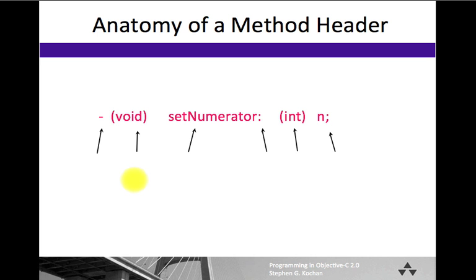Let's take a closer look, once again, for review of what a method header looks like. This is our setNumerator method. And as we noted, the leading minus sign, the leading character on the line, indicates the type of method. You can put a minus sign there, meaning this is an instance method, which means a message of this type can be sent to an instance from the class.